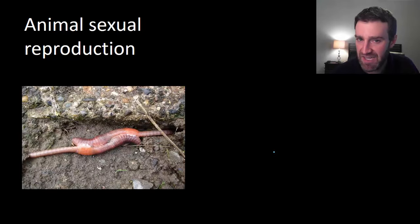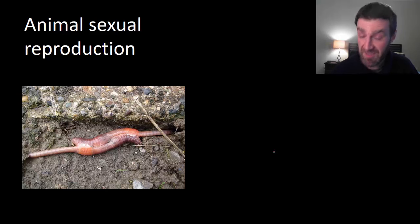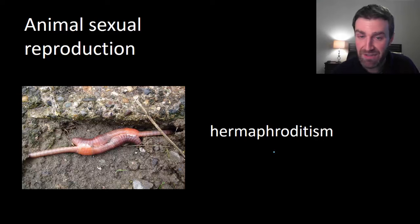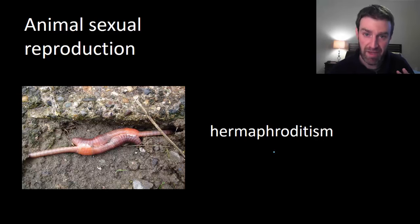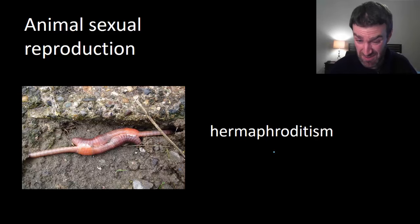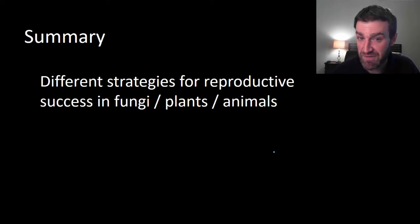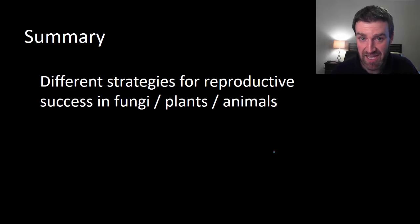Another adaptation that animals have to increase their odds of sexually reproducing successfully is hermaphrodism. Being a hermaphrodite simply means that an individual has both male and female sex organs, so that whenever they encounter a member of their species they can both fertilize each other's eggs. This might be really useful in slow-moving species or even species that don't move at all as adults — sponges, for example, are typically hermaphrodites. So all we did here was survey a few different strategies that fungi, plants, and animals use to reproduce both asexually and sexually.